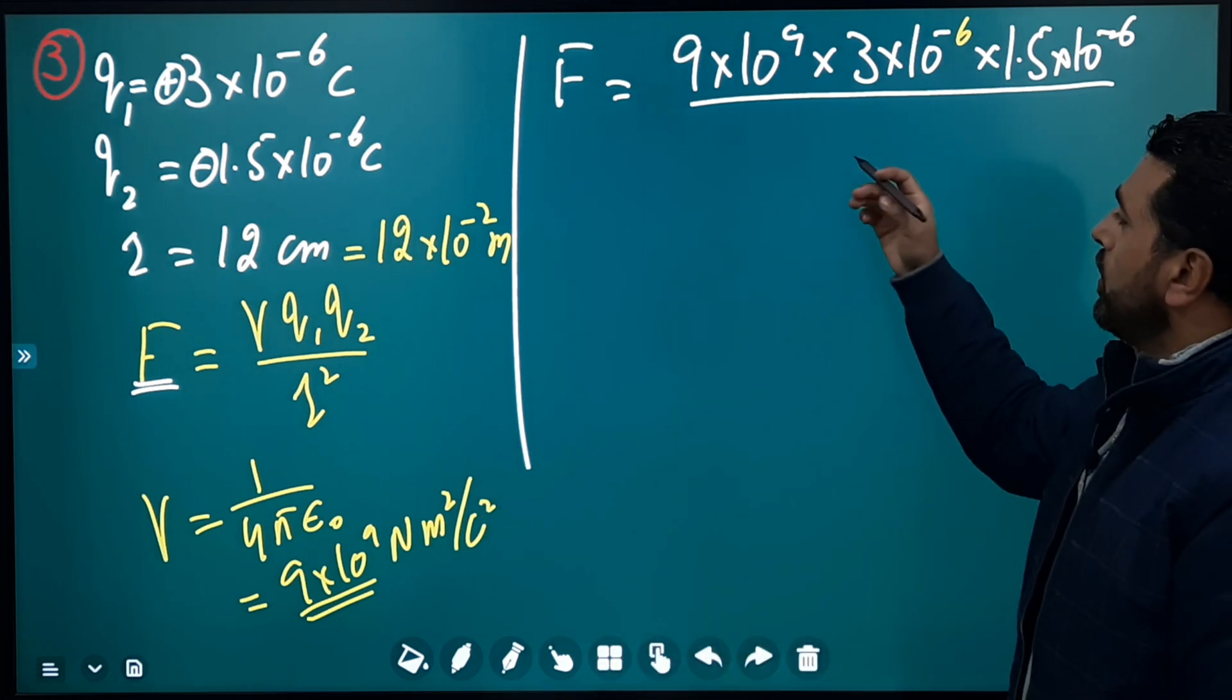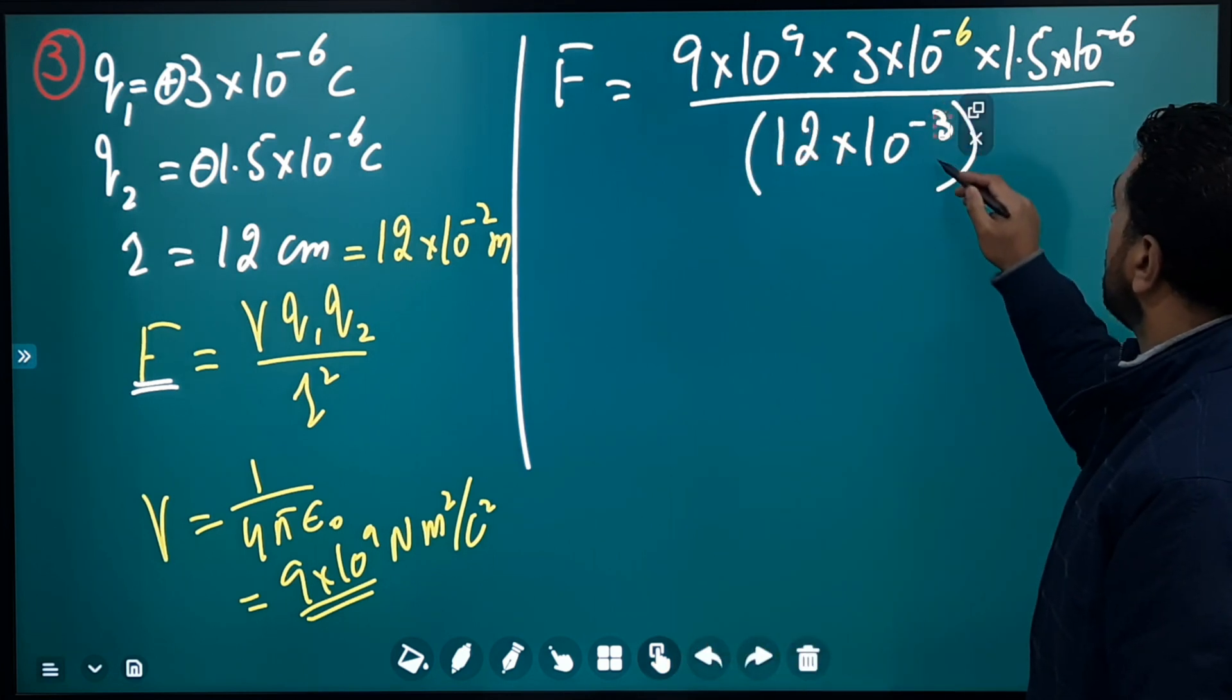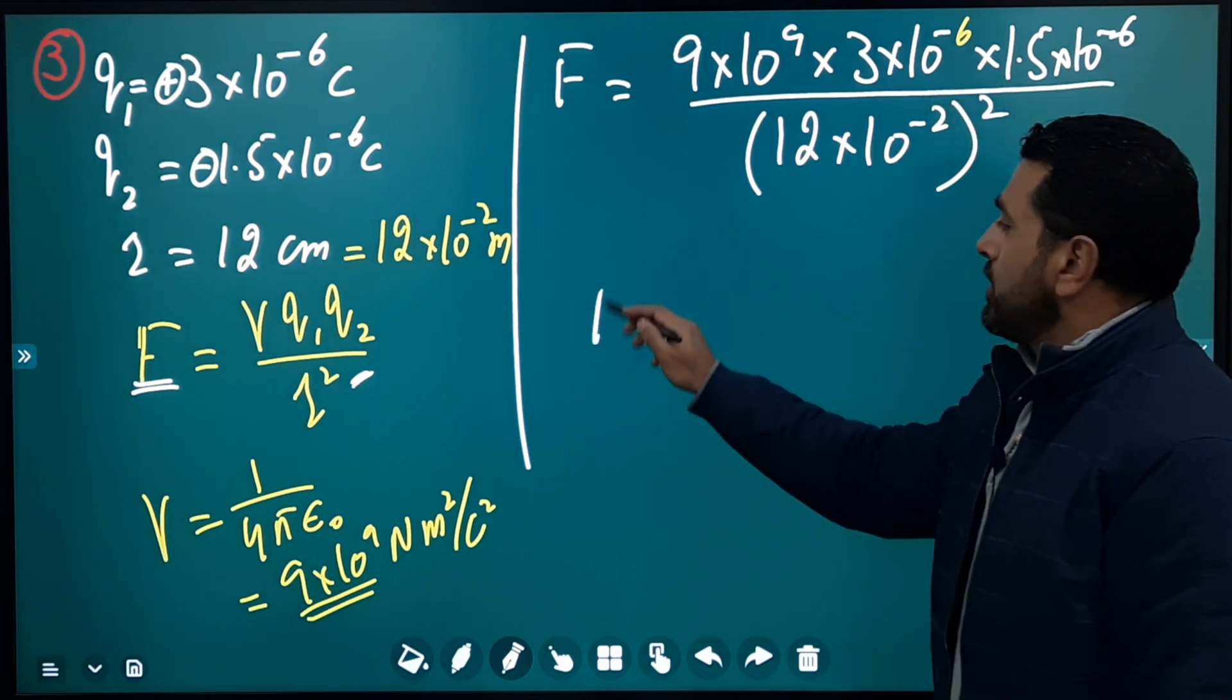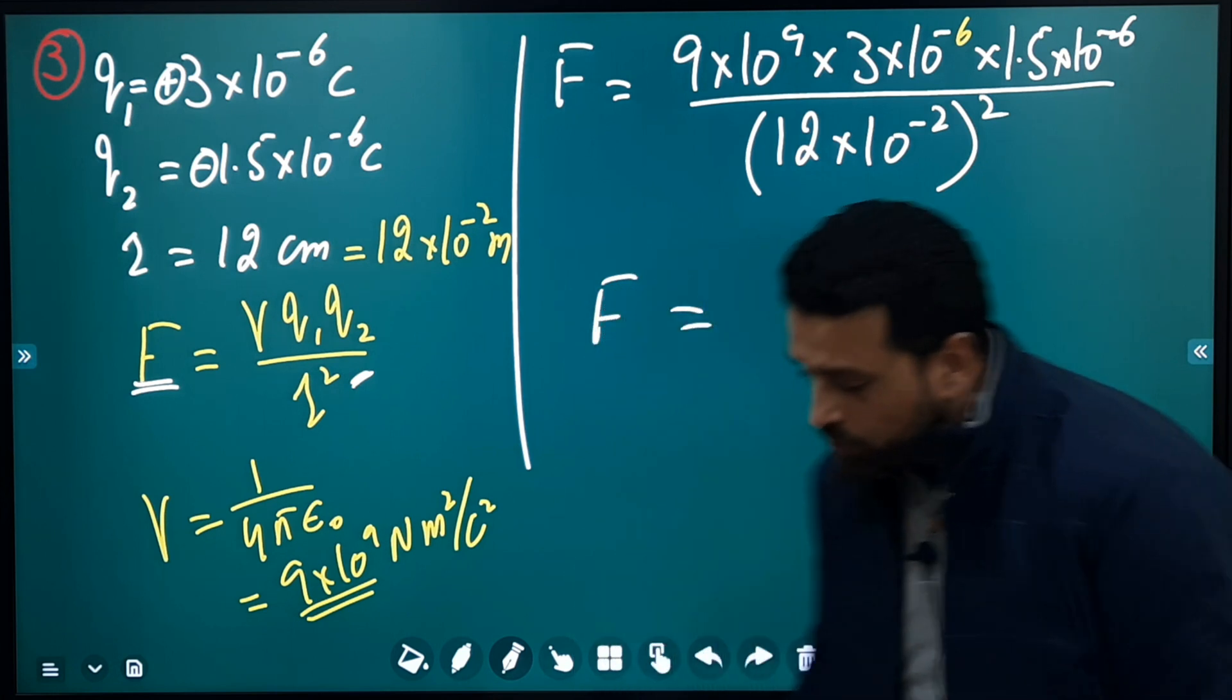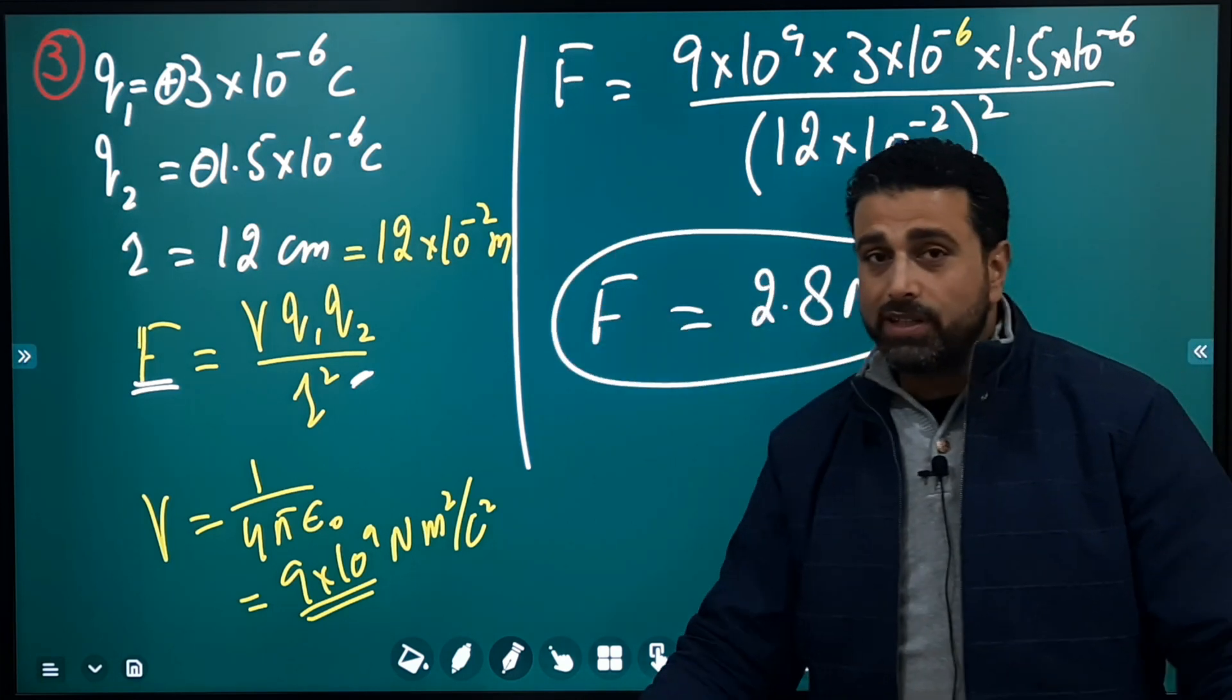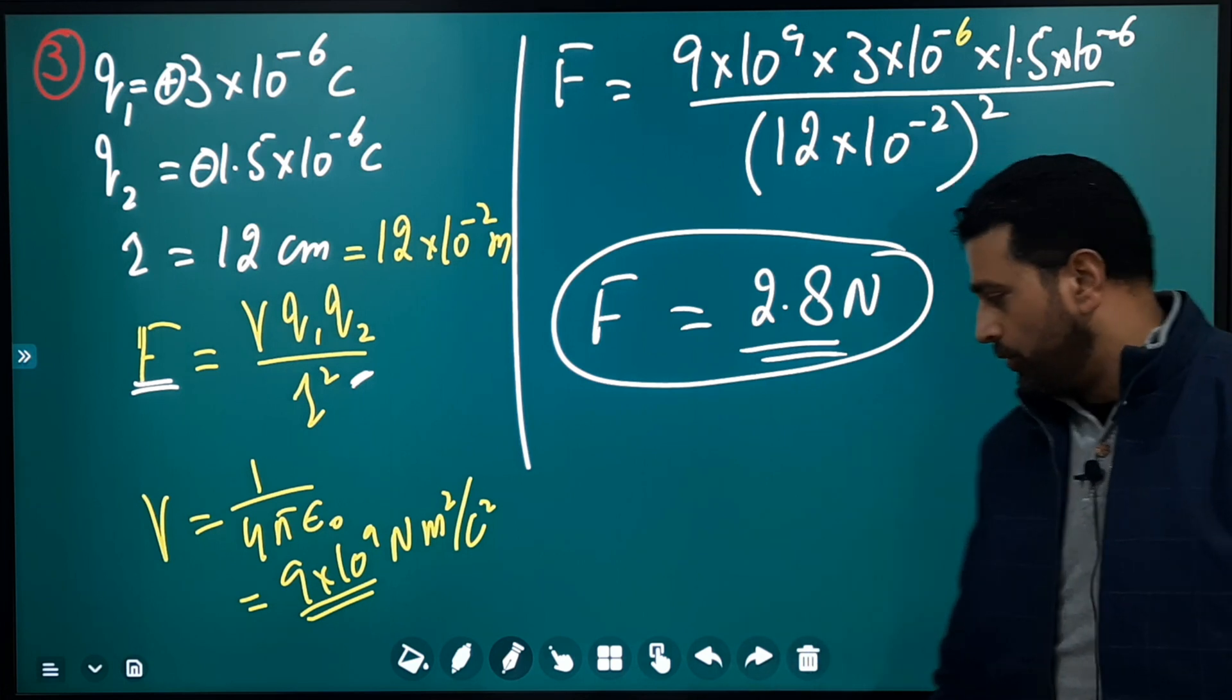So let's use it here now: 12×10⁻² squared, r squared. After simplifying this, after solving this, the force comes out to be - I've worked this out - 2.8 newtons. So it can't go simpler than that. We are given two charges, given distance between them, we have to find the force: 2.8 newtons.